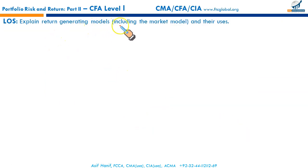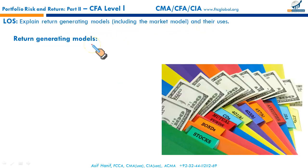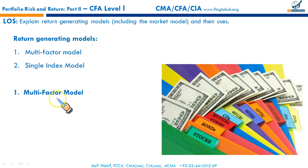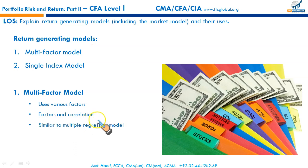The next LOS says: explain return-generating models, including the market model and their uses. A return-generating model provides investors with an estimate of the return they can earn from a particular security given certain input parameters. There are two models: the multi-factor model and the single-index model. The multi-factor model uses various factors — macroeconomic, fundamental, and statistical — such as inflation, interest rate, taxes, business confidence, GDP growth rate, consumer confidence, earnings growth, and firm size. These factors are correlated with the returns of the security.